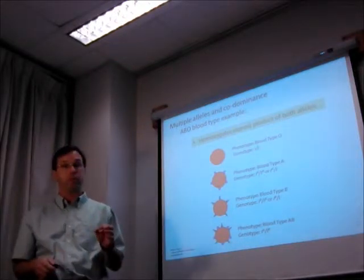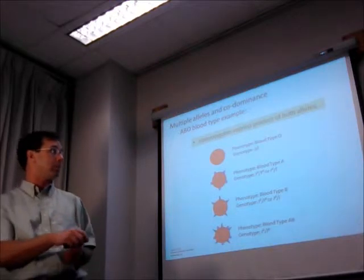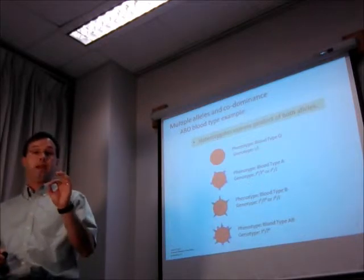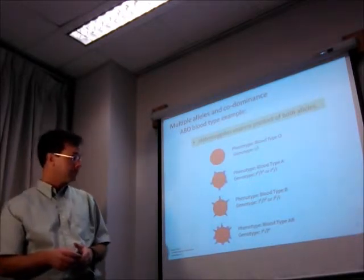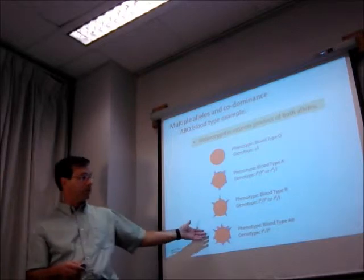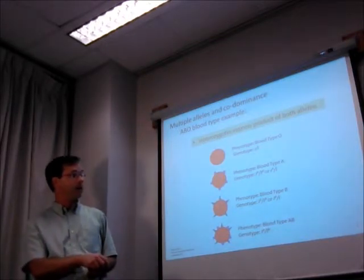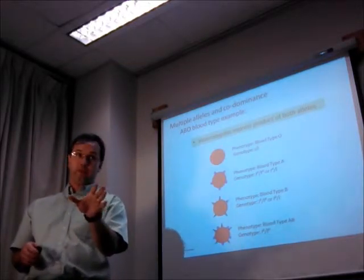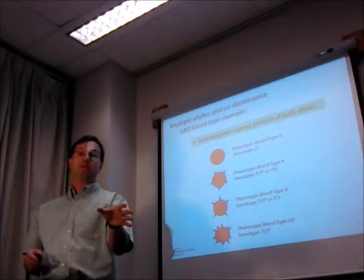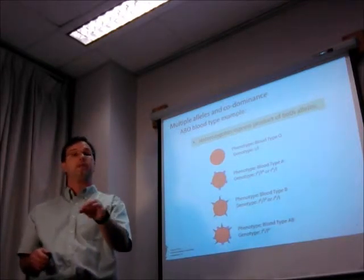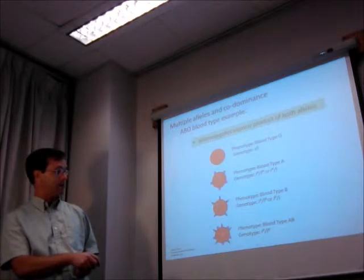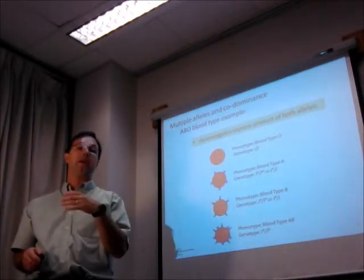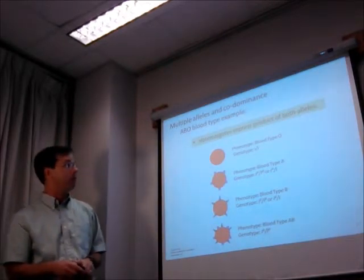Similarly, if you're IB IB, or IB little i, then you make only the B antigen on your red blood cells and you have type B blood. Finally, if you are a heterozygote for the IA and IB alleles, because both of those alleles are functional, you can actually make both of those types of glycosyl transferase enzymes and make both types of antigens. So you actually end up with the A antigen and the B antigen on your red blood cells and your type AB blood in that case.